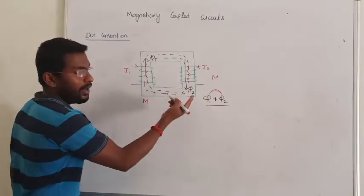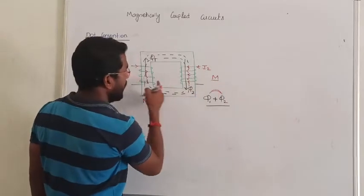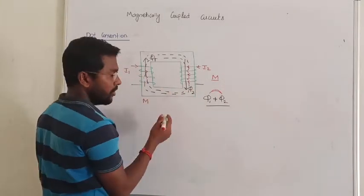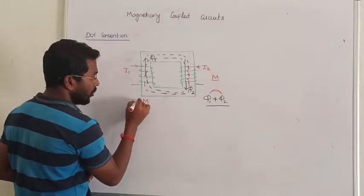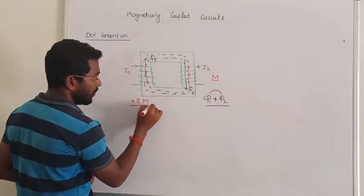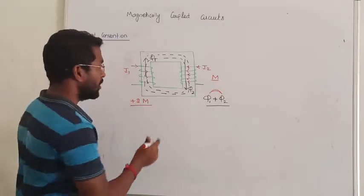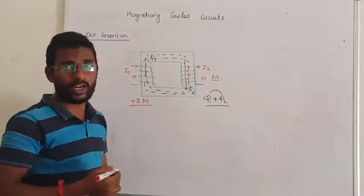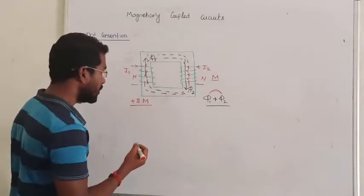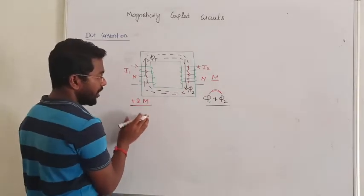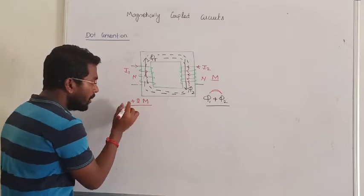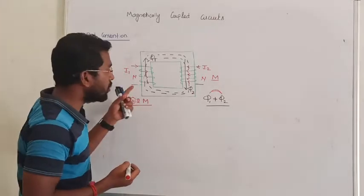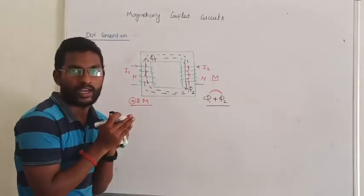The total inductance will become twice of M — assume the number of turns are equal. Since both are aiding each other, we keep the mutual inductance positive. Both are aiding each other, so the sign is plus.